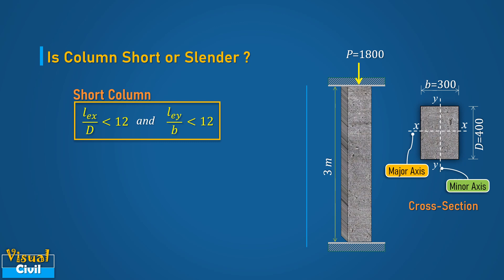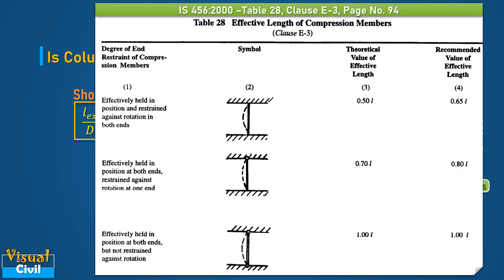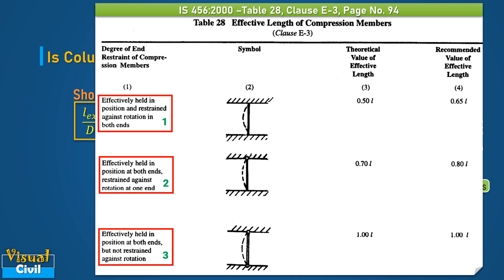To calculate the slenderness ratio, effective lengths LEX and LEY are required. In the problem statement, unsupported length equal to 3 m is given. Hence, let us refer Table 28 to calculate the effective length. As the column is braced against side sway in both directions at both ends, it is effectively held in position at both ends. The first three types given in the table satisfy this condition. As the condition of rotation restraint is not mentioned in the problem statement, let us assume the third type for simplicity.